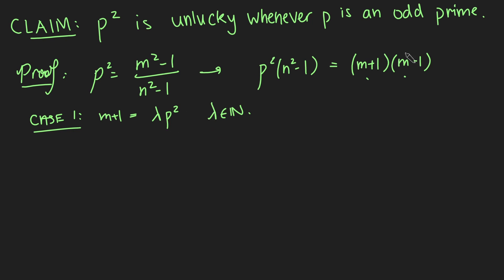So if this is the case, we can just substitute this back into this equation here, and we're going to get p squared times n squared minus 1 equals m plus 1, which is lambda p squared, times m minus 1, which is lambda p squared minus 2. Okay, we can cancel the p squareds on both sides. And then if we add 1 on both sides, we get that n squared is just lambda squared p squared minus 2 lambda plus 1.